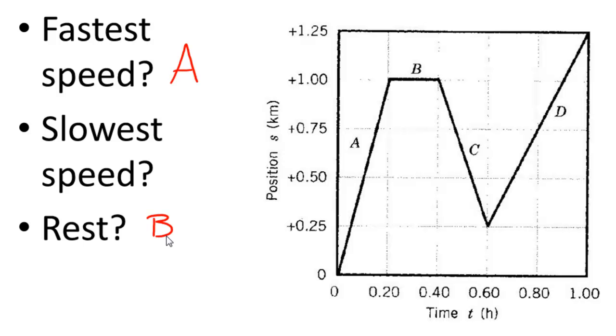And where it's moving the slowest is going to be the gentlest slope. The gentlest slope. Which one has a gentlest slope? Letter C or letter D? And when you look closely at it, you're going to see letter D has the gentlest slope.